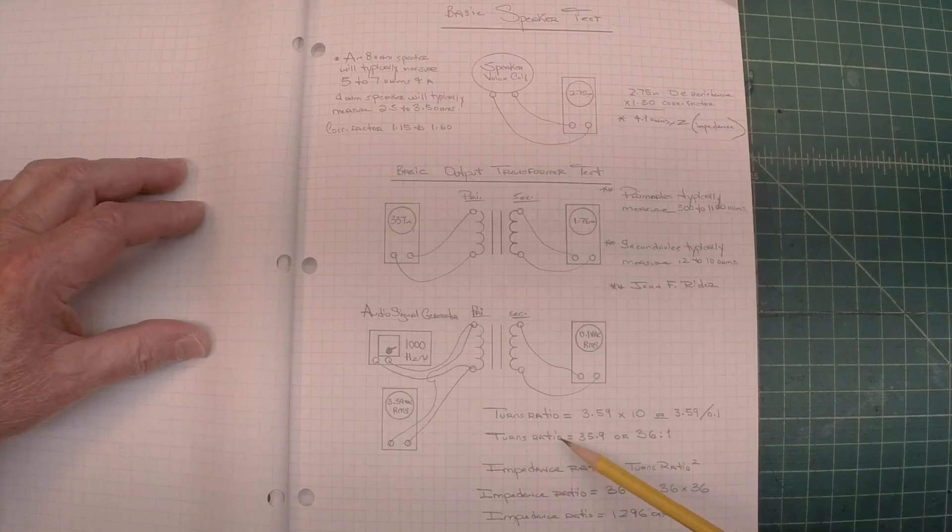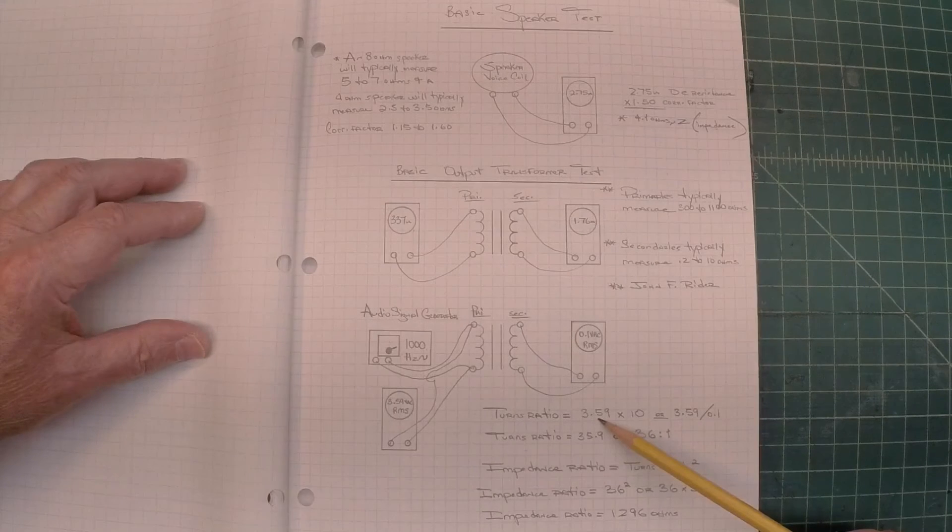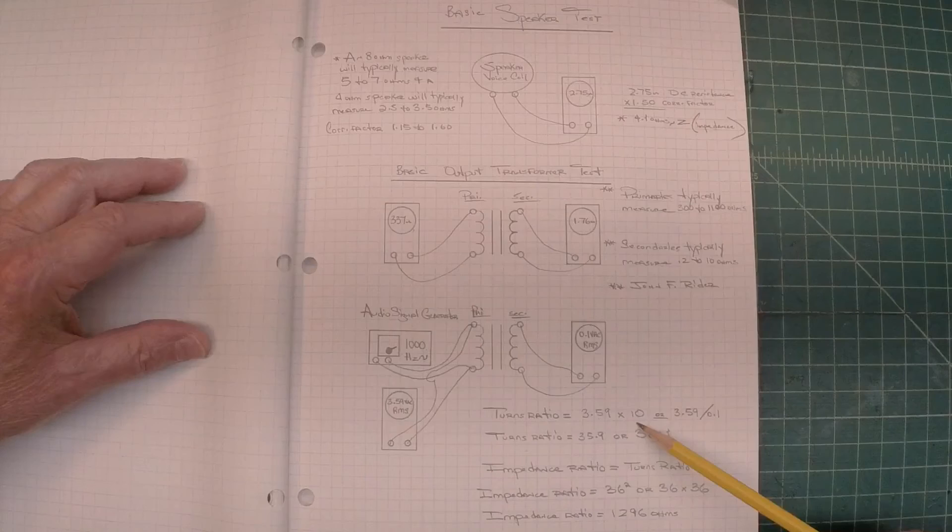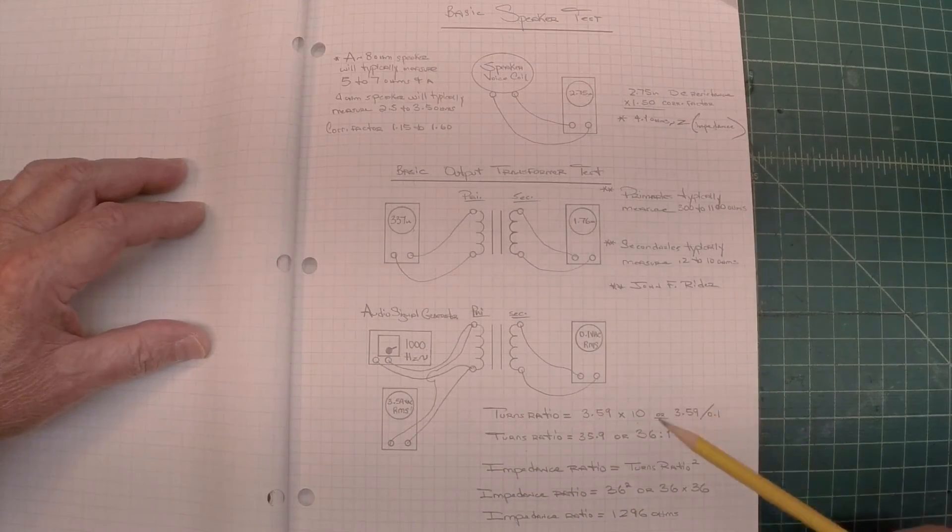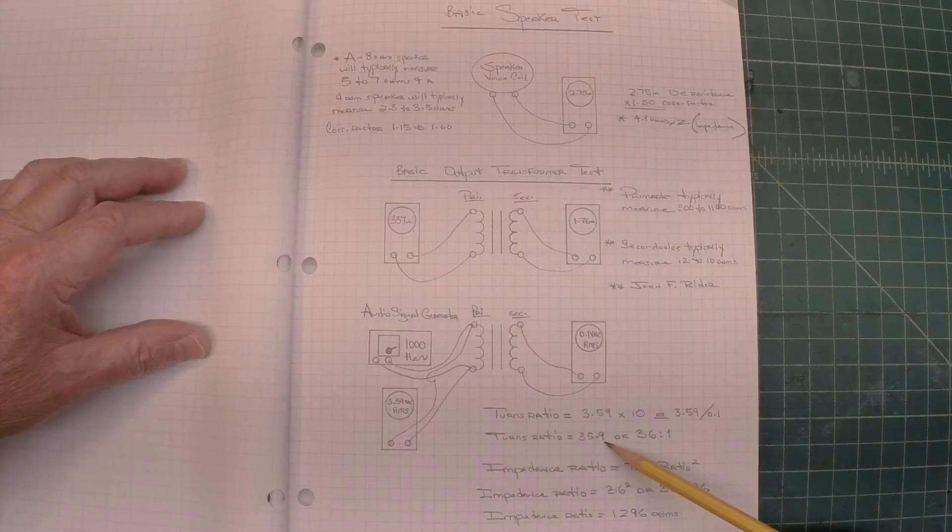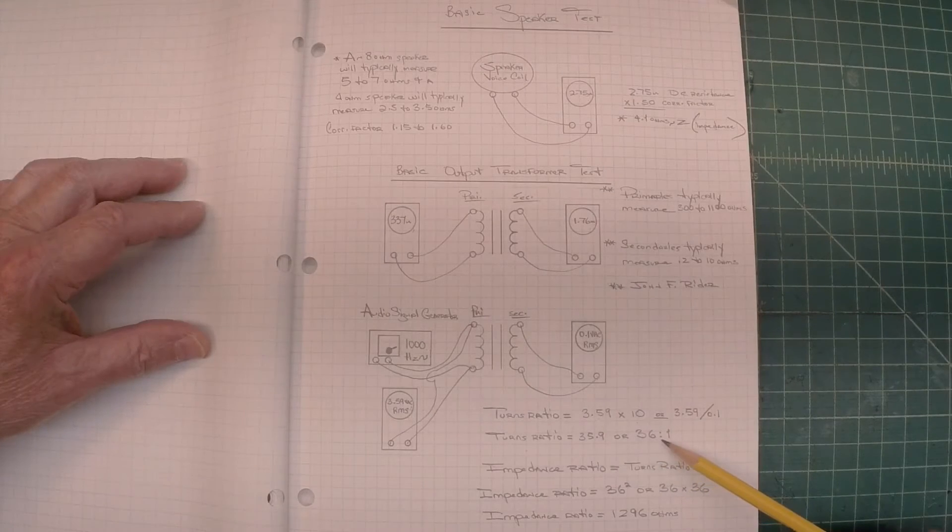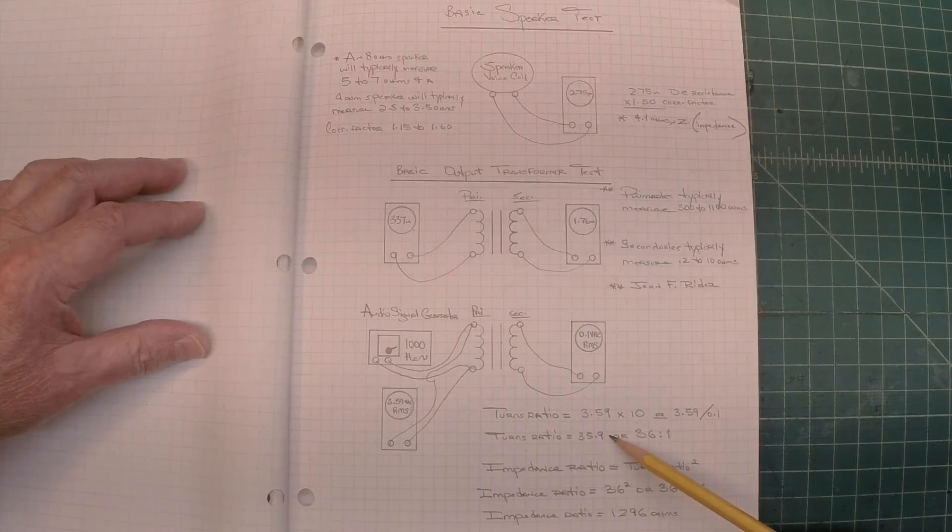So to calculate the turns ratio, simply take 3.59, I can just multiply that by 10, or I can take the 3.59, divide it by 0.01, and you come up with 35.9, or just rounded up a 36 to 1 turns ratio for the output transformer that's there.